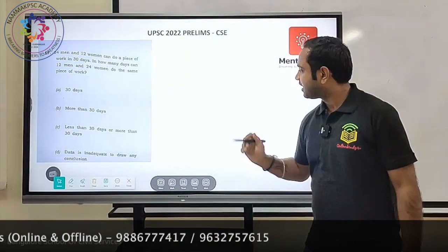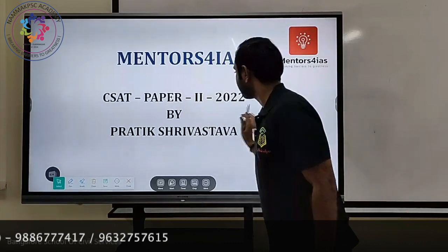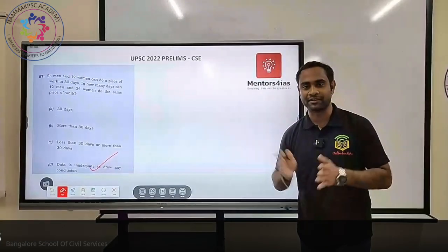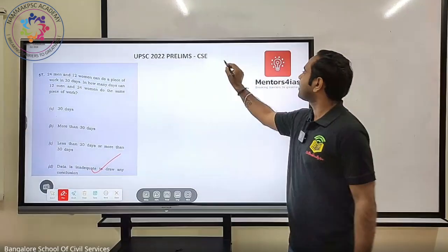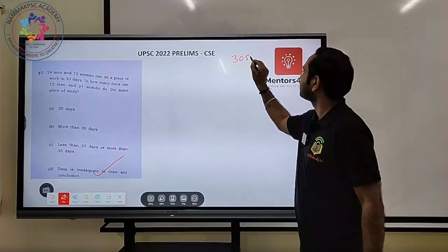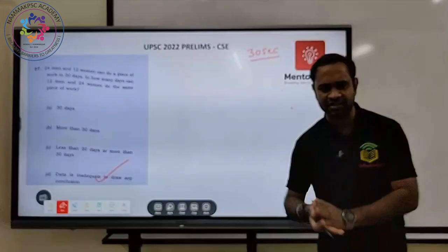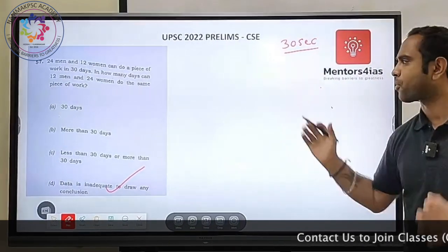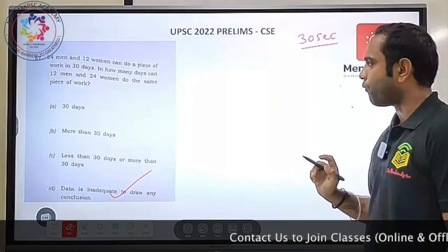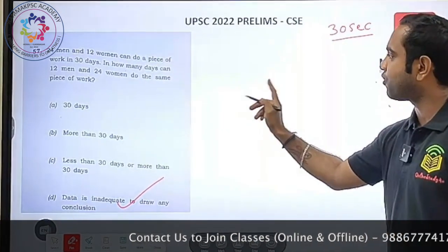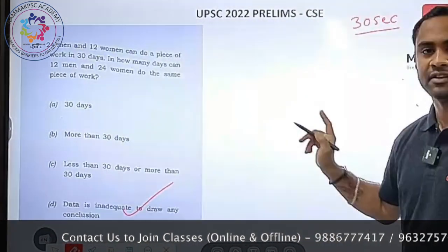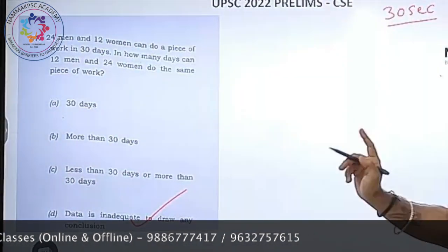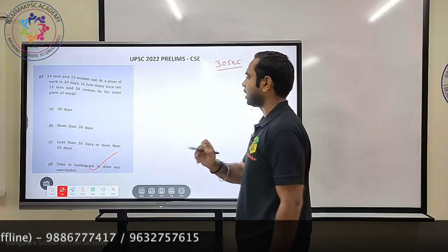Question number one — you could have directly ticked this. Option D is the correct answer; it will not even take 30 seconds. The question is: 24 men and 12 women can do a piece of work in 30 days. In how many days can 12 men and 24 women do the same piece of work? The answer is: data inadequate.